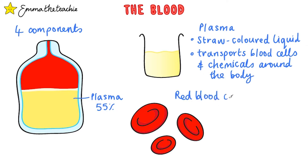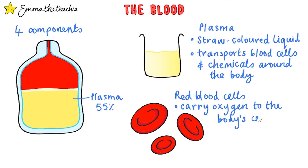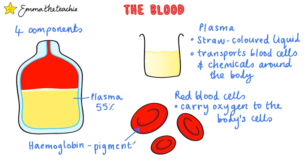Then we've got red blood cells. These have the important function of carrying oxygen around the body, bringing it to the cells that need it. To do this, they have some special adaptations. First up, they've got a pigment called hemoglobin. This can bind strongly to oxygen, which helps them hold onto it and carry it around the body. It's also what makes the red blood cells red.